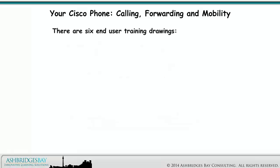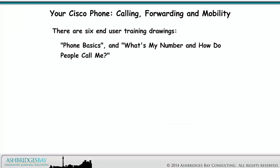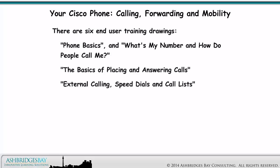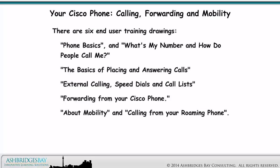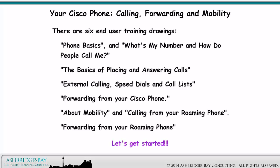There are six end-user training drawings: phone basics and what's my number and how do people call me; the basics of placing and answering calls; external calling; speed dials and call lists; forwarding from your Cisco phone; about mobility and calling from your roaming phone; and forwarding from your roaming phone. Let's get started.